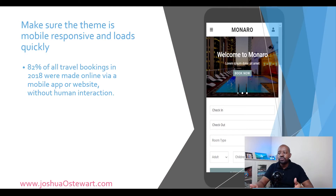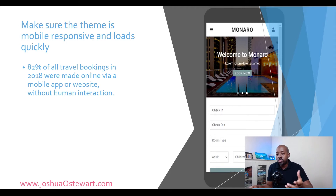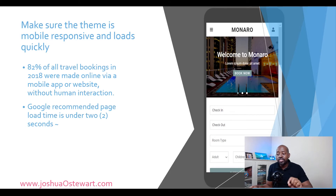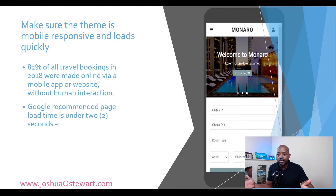The second thing is to make sure the theme is mobile responsive and loads quickly. For example, 82% of all travel bookings in 2018 were made online via mobile app or website, and that was without human interaction. Google recommends your page should load in under two seconds. If prospective guests come to your website and it's taking too long to load, they're going to try another website — and a lot of that comes down to your theme.